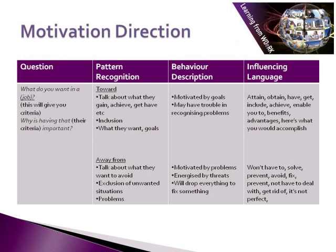A person with an away from pattern will talk about what they want to avoid, about problems and what they don't want to have happen. They will be motivated by problems and the thought of solving them. They'll be energised by threats and will drop everything to fix something, as they love sorting out problems. Language to use with this pattern includes: you won't have to do whatever it is, it'll solve this problem, it'll prevent so-and-so happening, avoid, fix, prevent, not have to deal with, get rid of, it's not perfect.